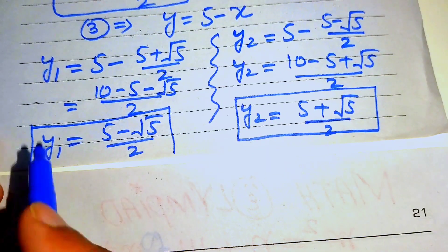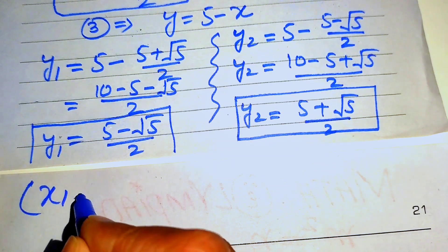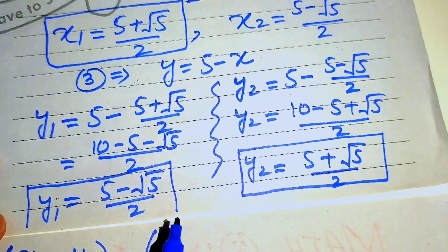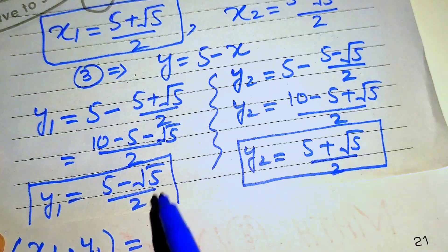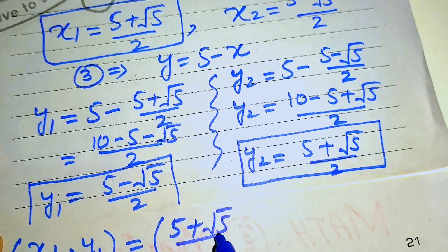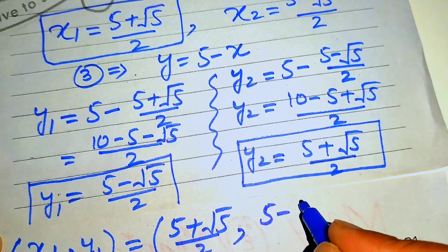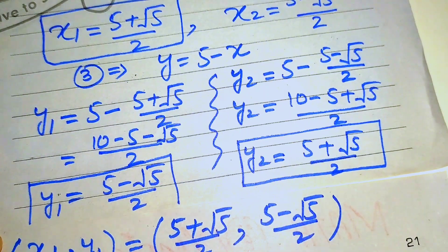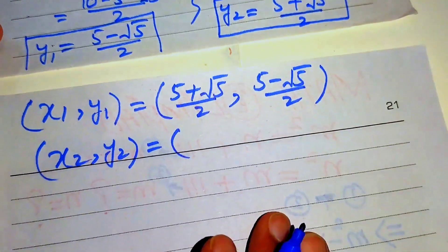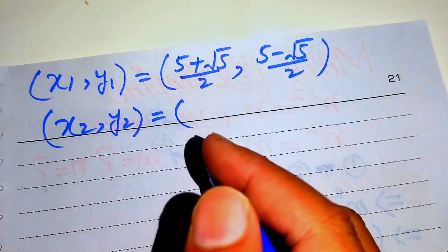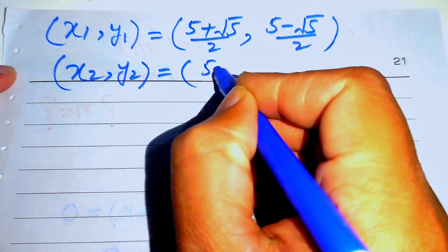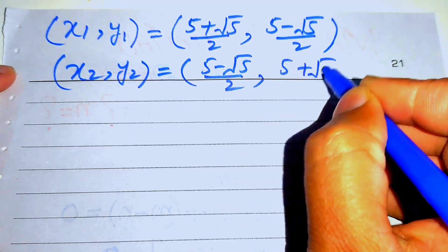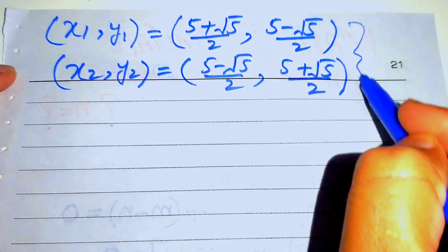We have two solution pairs. The first solution is x1 equals (5 plus square root of 5) divided by 2 and y1 equals (5 minus square root of 5) divided by 2. The second solution is x2 equals (5 minus square root of 5) divided by 2 and y2 equals (5 plus square root of 5) divided by 2.